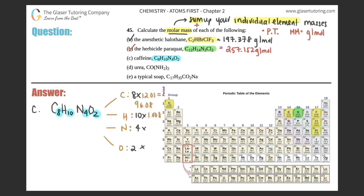Carbon is 12.01, so 8 × 12.01 = 96.08. Hydrogen is 1.008, so 10 × 1.008 = 10.08. Nitrogen is 14.01, so 4 × 14.01 = 56.04. Oxygen is 16.00, so 2 × 16.00 = 32.00. Adding them all up: 96.08 + 10.08 + 56.04 + 32.00 = 194.20 grams per mole.